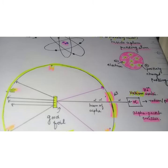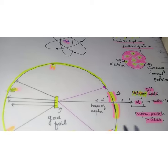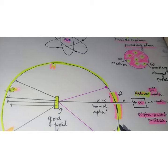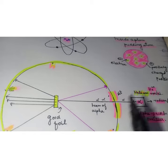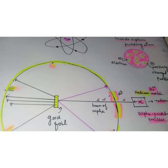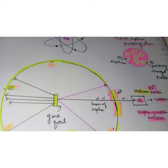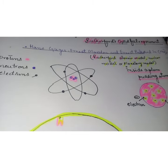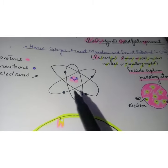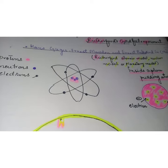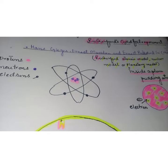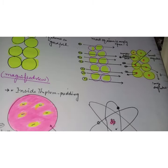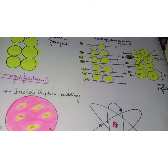Rutherford's atomic model became known as the nuclear model. In the nuclear atom, the protons and neutrons which comprise nearly all the mass of an atom are located inside the nucleus at the center of the atom. Electrons are distributed around the nucleus and occupy most of the volume of the atom. It is worth emphasizing just how small the nucleus is compared to the rest of the atom. If we could blow up an atom to the size of a large professional football stadium, the nucleus would be about the size of a marble.